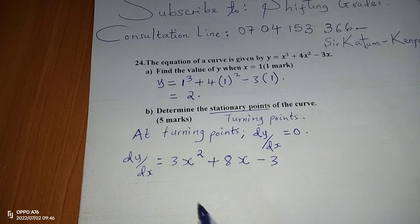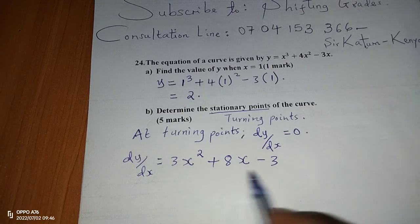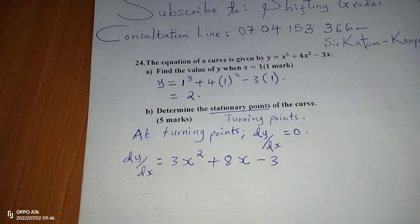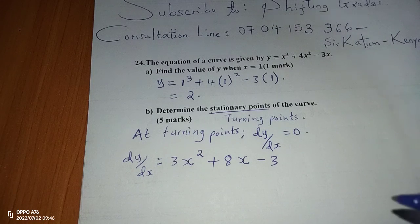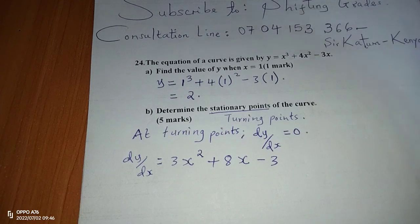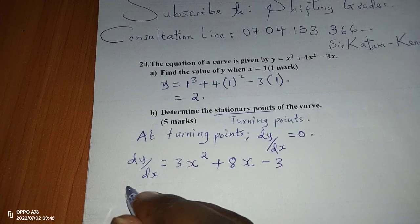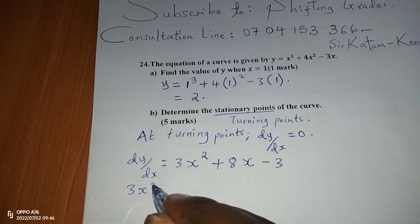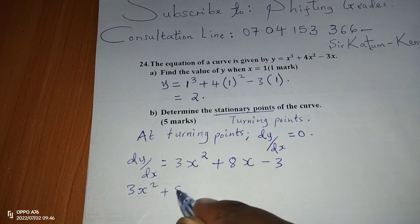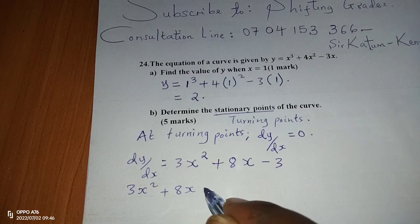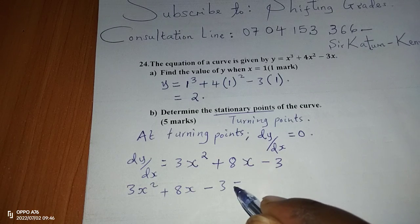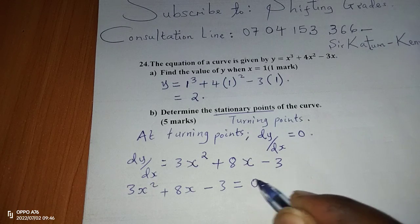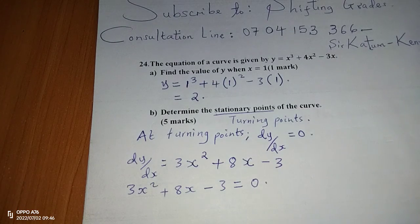At the turning point this gradient function equals 0, so we can find the values of x where the gradient becomes 0. We set 3x squared plus 8x minus 3 equals 0.